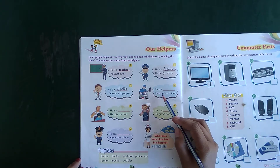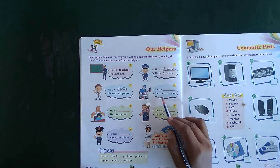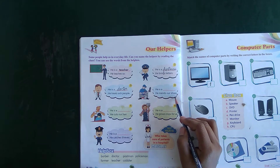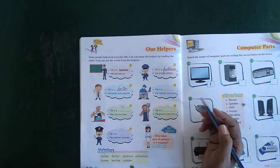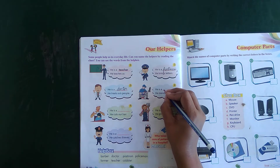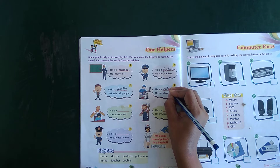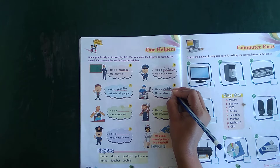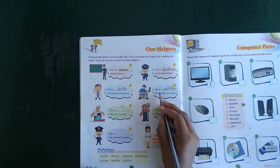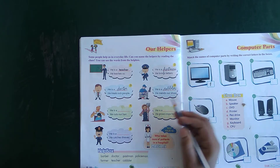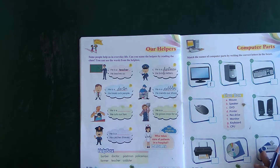Number four. He makes our shoes. Shoes kaun banata hai? Cobbler. Yeh kaun hai? Cobbler. C-O-B-B-L-E-R. Cobbler. He is a cobbler. He makes our shoes.